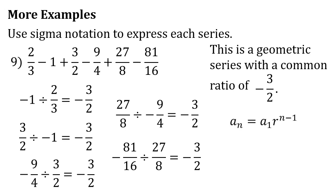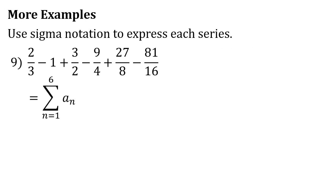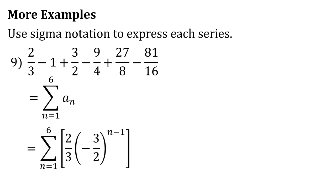Using the geometric sequence formula aₙ = a₁ × r^(n−1), we substitute a₁ = 2/3 and r = −3/2, giving aₙ = (2/3) × (−3/2)^(n−1). So the sigma notation of this series is the sum of (2/3) × (−3/2)^(n−1) as n goes from 1 to 6.